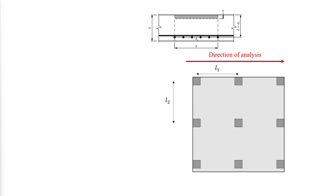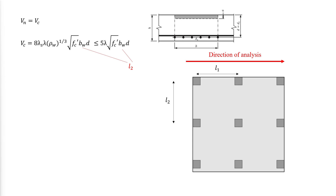The strength of two-way slabs in one-way shear rarely governs, and thus no reinforcement is required — the shear strength comes from the concrete only. The one-way shear strength can be evaluated using the standard equation but is limited to a maximum value. Bw is the width of the plane extending across the entire slab width. Lambda-s is the size effect modification factor, because strength does not increase linearly proportional to thickness, and has a maximum value of 1.